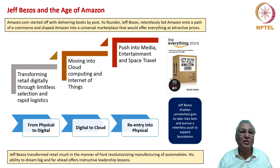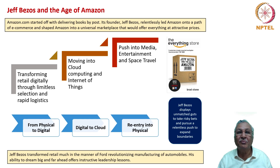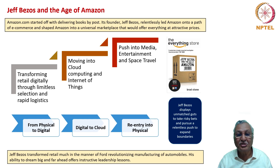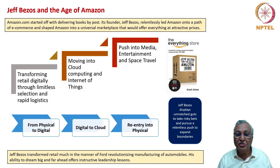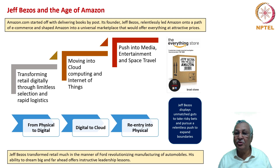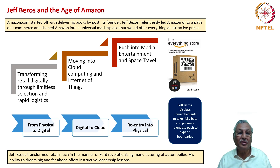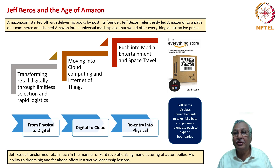'Jeff Bezos and the Age of Amazon' — Amazon.com started off with delivering books by post. Its founder Jeff Bezos relentlessly led Amazon onto a path of e-commerce and shaped it into a universal marketplace offering everything at attractive prices. His three strategies: transforming retail digitally through limitless selection and rapid logistics; moving into cloud computing and the Internet of Things; and pushing into media and entertainment, from physical to digital to cloud and re-entry into physical. Jeff Bezos displays unmatched readiness to take risky bets and pursue a relentless push to expand boundaries, transforming retail much in the manner Ford revolutionized automobile manufacturing.